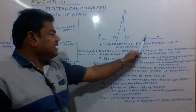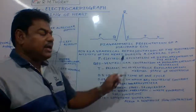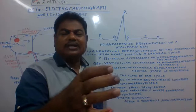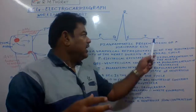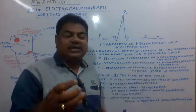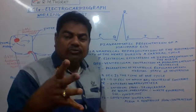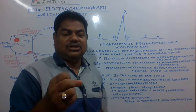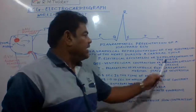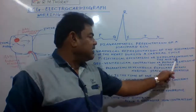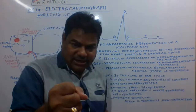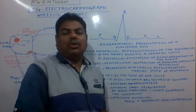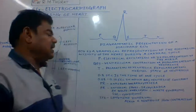The T wave indicates the relaxation of the ventricles — repolarization of the ventricles. After the ventricles contract, they must also relax. Depolarization means contraction — systole — and repolarization means relaxation — diastole.